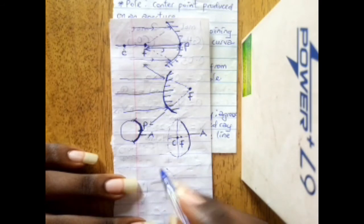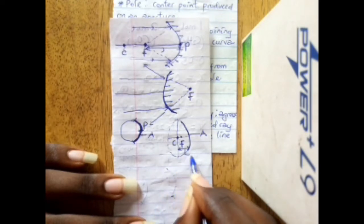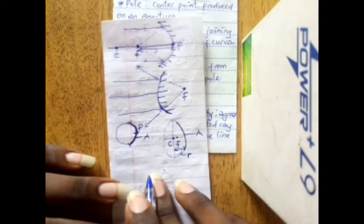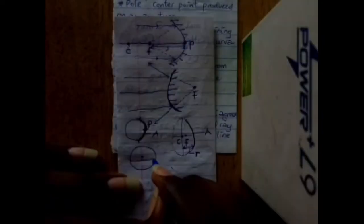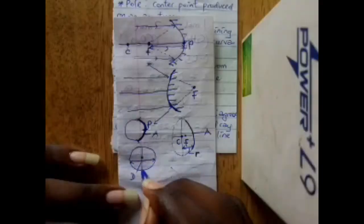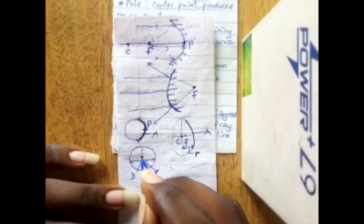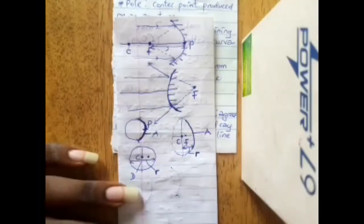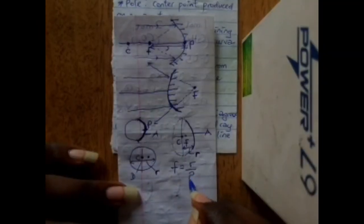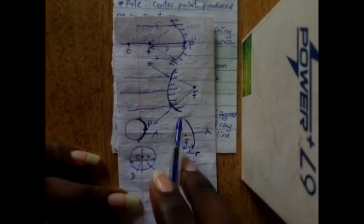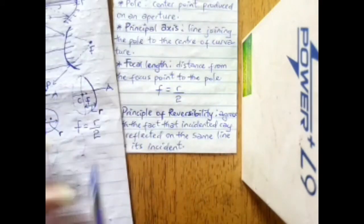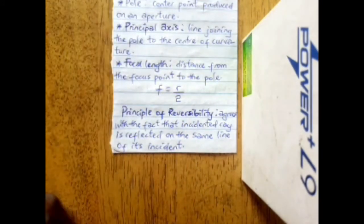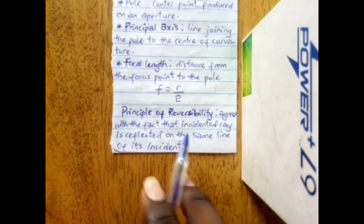Since C is the center of the circle, the distance from C to the pole is the radius. Half-way through is the radius, and our focus lies between the center of curvature and the pole. From experiment it is proven that focal length f equals radius over two: f = R/2.